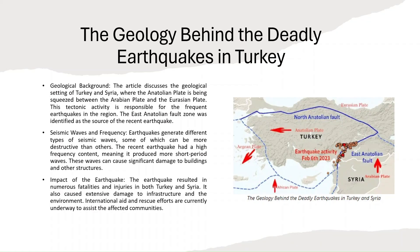Our next topic is the recent deadly earthquake in Turkey and Syria. The Anatolian plate finds itself in a geological squeeze between the Arabian plate and the Eurasian plate, and this intense tectonic activity is the reason behind the frequent earthquakes seen in the region. The recent earthquake's epicenter was identified along the East Anatolian Fault Zone, which is a hotspot for seismic activity. Movement along fault lines like this is a natural consequence of the ongoing tectonic disturbances in the region.